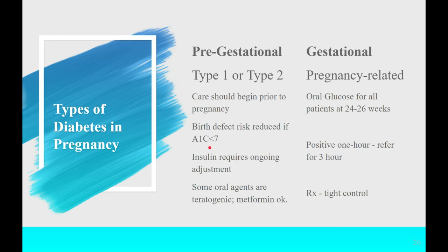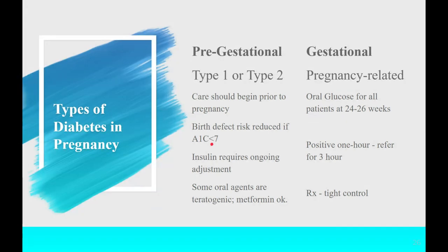Insulin requires ongoing adjustment if it's part of her management plan. Insulin needs go down in the first trimester, particularly if there is vomiting and mom is struggling to eat — she may experience hypoglycemia more frequently. In the second trimester, the placenta starts to churn out HPL, human placental lactogen, which acts as an insulin antagonist, making mom more insulin resistant. Her insulin needs will go up; by the end of pregnancy they will be at least triple what she was taking prior to pregnancy. This is a team effort — the patient has to communicate with the provider and the provider has to respond.